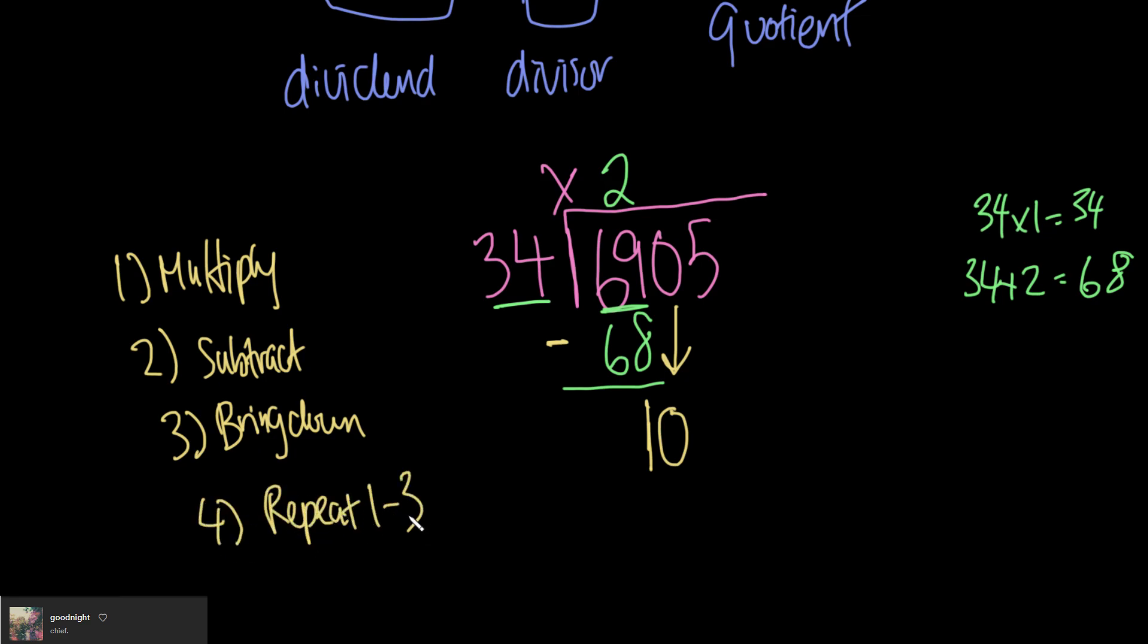So we have here 10 and 34. But 34 times 1 is already 34, I'm going to go over, which means I have to multiply by 0, because that's the only number that's less than... these can only be integers. So I'm going to have to put 0 here. Obviously, 0 times 34 is just 0. 10 minus 0 is obviously 10. I'm going to bring down, yeah, 105 at the end here.